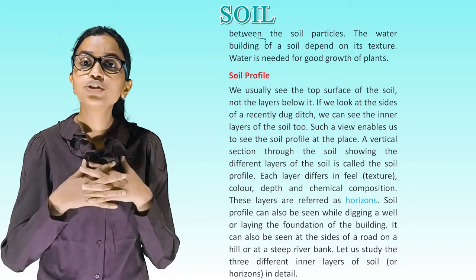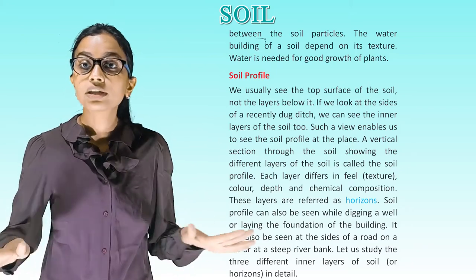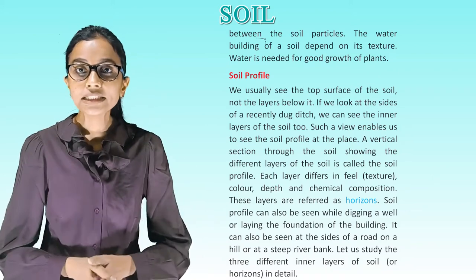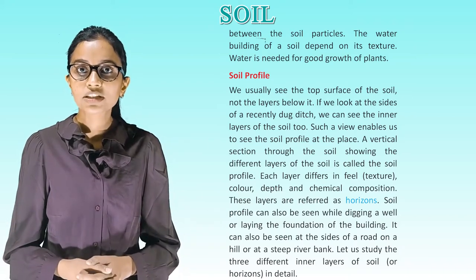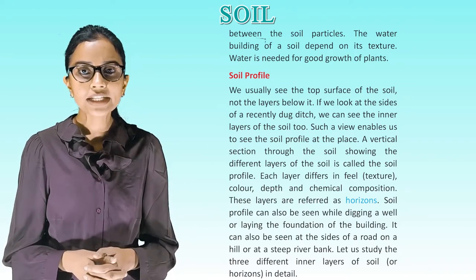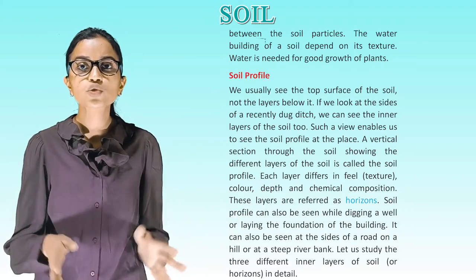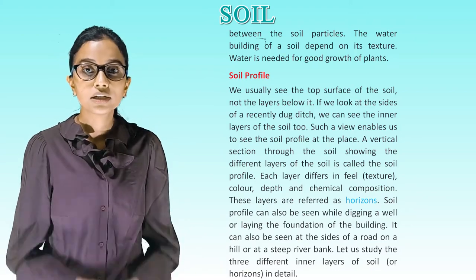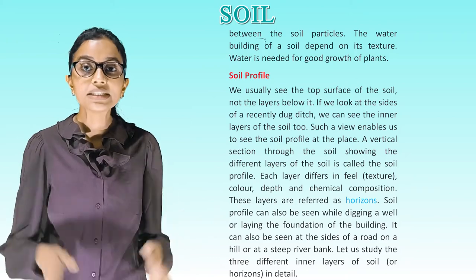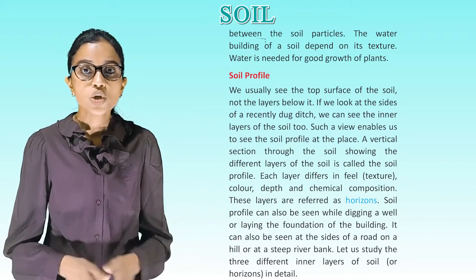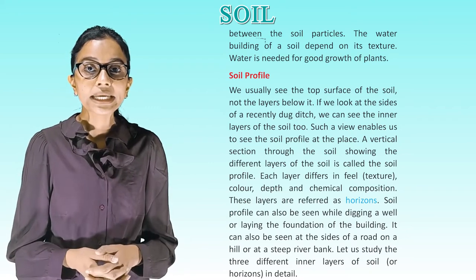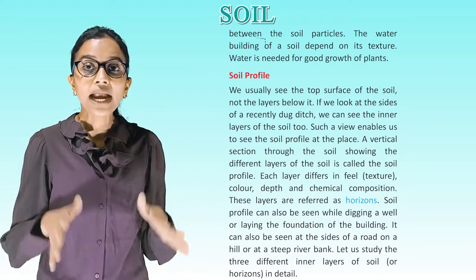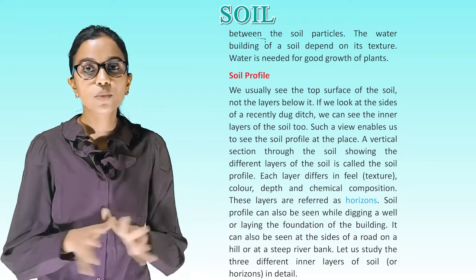Soil profile: We usually see only the top surface of the soil. If we look at the sides of a recently dug ditch, we can see the inner layers too. A vertical section through the soil showing the different layers is called the soil profile. Each layer differs in feel, texture, color, depth and chemical composition. These layers are referred to as horizons. Soil profile can also be seen while digging a well, laying a building foundation, or at the sides of a road on a hill or a steep river bank.